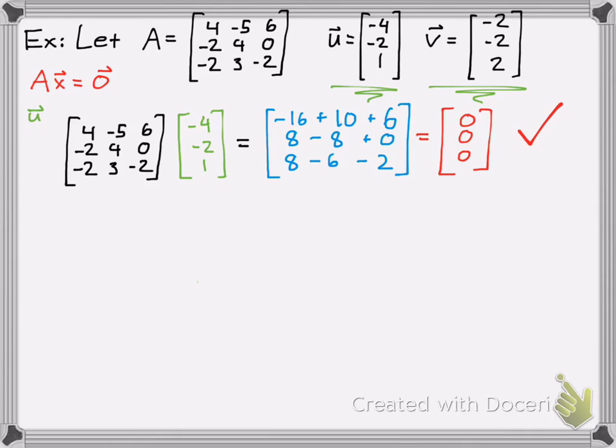So yeah, we did get the 0 vector. So therefore, U is in the null space of A. It's that simple, just for checking if a vector is in the null space.